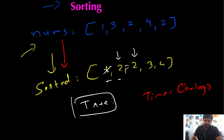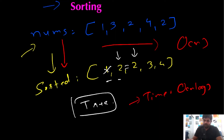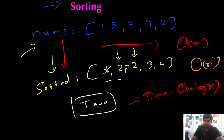After sorting, checking whether the array contains a duplicate only takes O(n) time, but overall we write this as O(n log n). This is a much bigger improvement than our brute force approach which had O(n²), but let's see whether we can find an even more optimal solution.